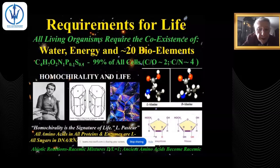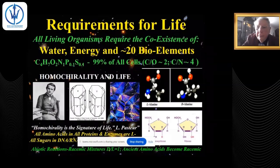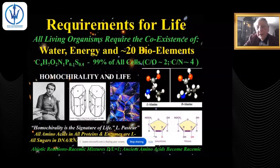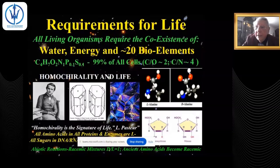After living things die, amino acids slowly flip from one chirality to the other. Starting at 100% L-alanine, they gradually flip until you reach equal amounts — a racemic mixture. Ancient amino acids, millions of years old, are racemic. This process of amino acid racemization provides a clock for estimating the age of biological materials.